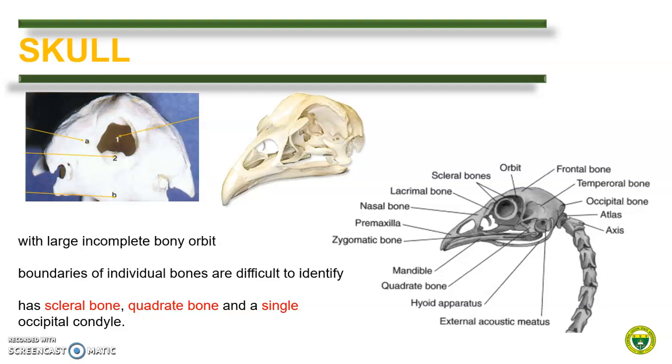The bones of birds are pneumatized, meaning they are lined by mucous membrane instead of bone marrow and they communicate with the respiratory system, especially the long bones. The skull of birds has three main parts: the brain case, the bony incomplete orbit, and the beak. The boundaries of individual bones are difficult to identify because the sutures are lost soon after hatching. Other unique features include the presence of scleral bones or rings — a bony structure surrounding the eyeball, found in vertebrates such as fish and birds but absent in mammals. Birds also have a bone called the quadrate bone, which allows them to move the upper mandible rather than the lower relative to the cranium. Interestingly, birds have a single occipital condyle, enabling them to rotate their head to a greater degree than mammals.